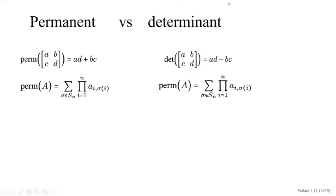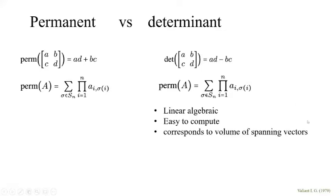Now let's talk about permanent versus determinant. The permanent is defined for two by two matrix [a, b; c, d] as ad plus bc. For determinant, ad minus bc. This is high school mathematics. We know that determinant is linear algebraic and easy to compute, corresponding to the volume of spanning vectors. There's a quick algorithm of Gaussian elimination that takes n cubed time to compute a determinant.